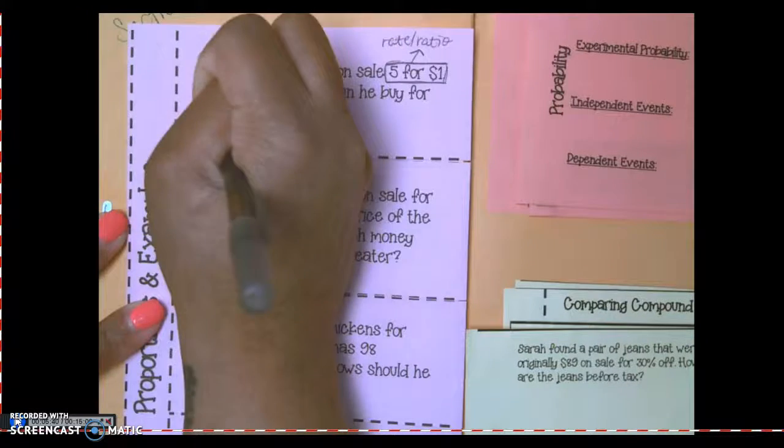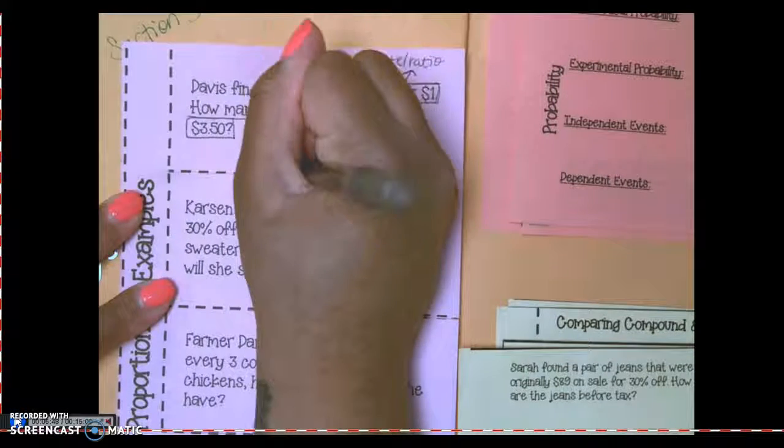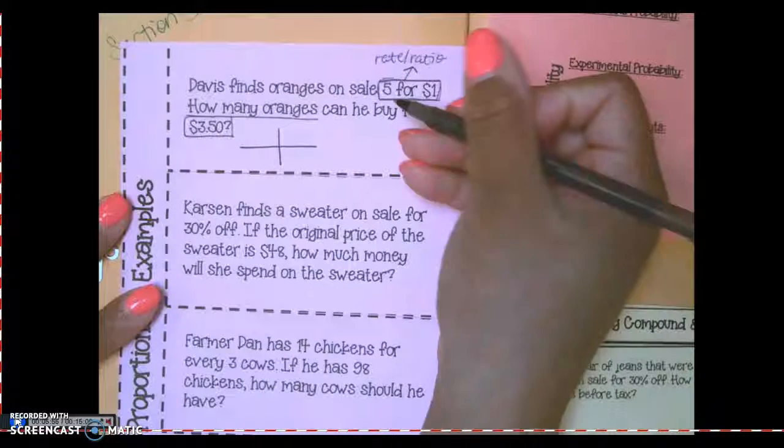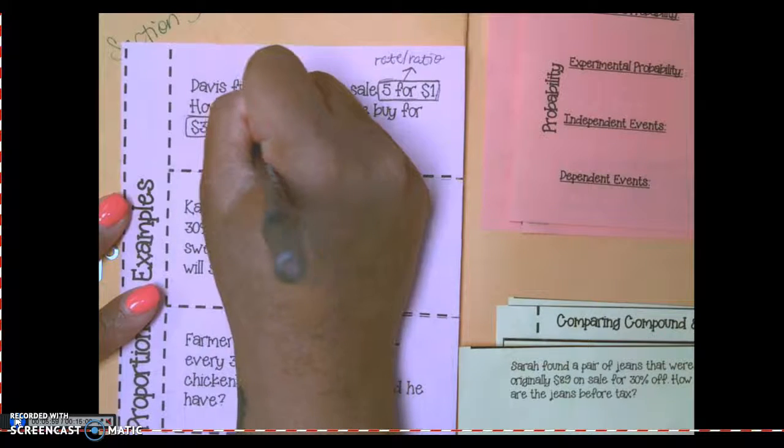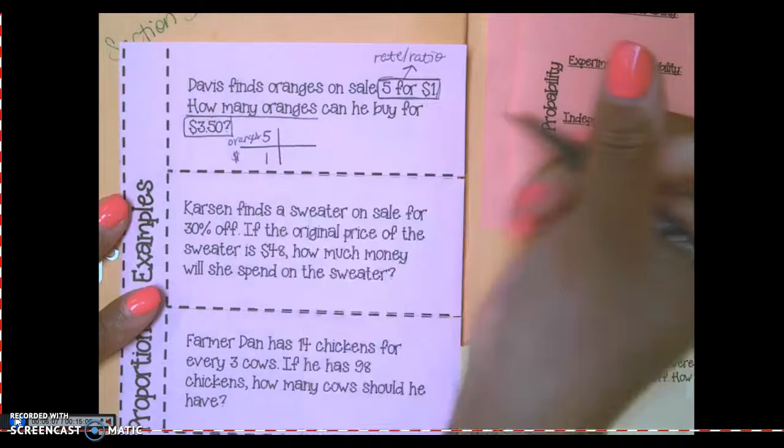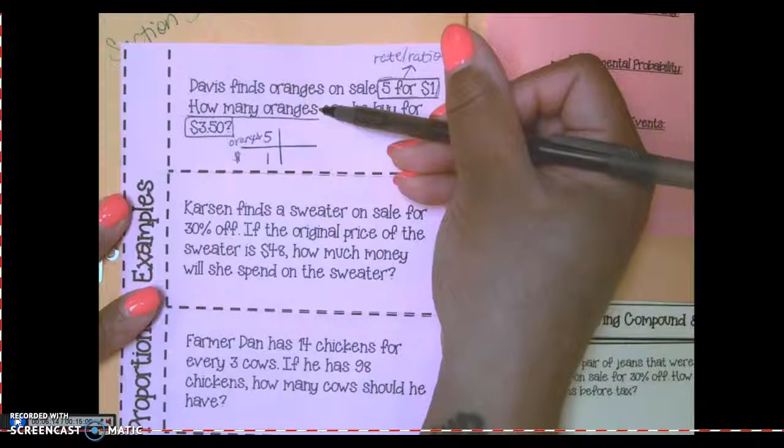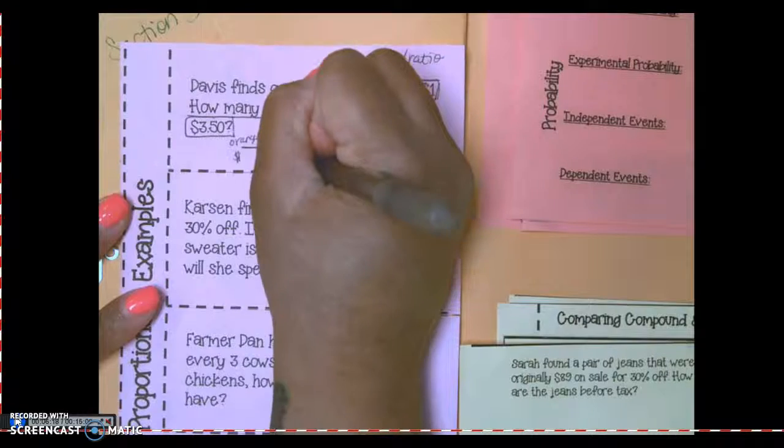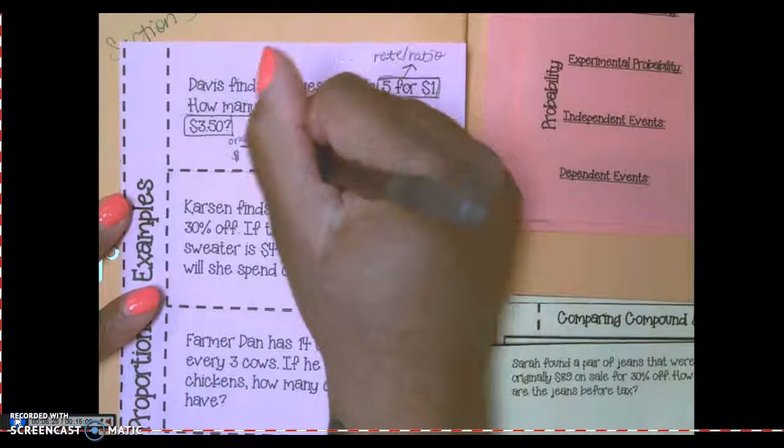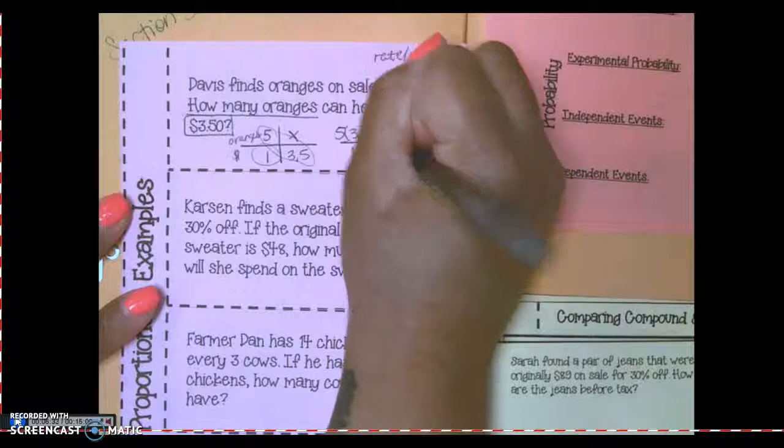Okay, back to Davis. How many oranges can he buy for $3.50? This is the unknown and this is how much they're spending. What do I need to make? Proportion box. What goes in the box? What are the things that are going in the box? The things you're giving me, numbers. Five, what? Oranges. How many oranges do I know about that go with some dollars? Five and one. What do I not know about? I don't know the number of oranges in the three dollars and fifty cents part.